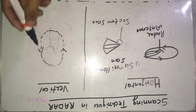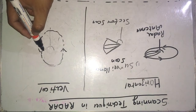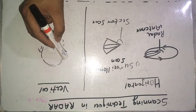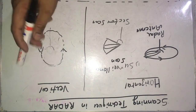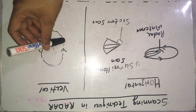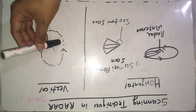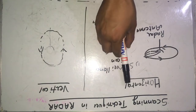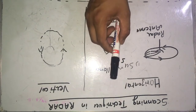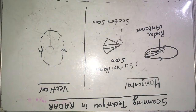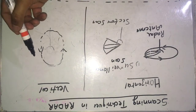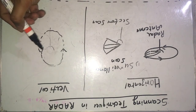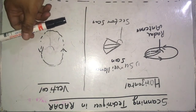In vertical scanning, the azimuth angle is kept constant while the antenna varies its elevation angle. This is the opposite of horizontal scanning, where the azimuth angle varies but the elevation angle remains constant. Many land-based height-finding radars use a vertical sector scan with an antenna that mechanically moves up and down.